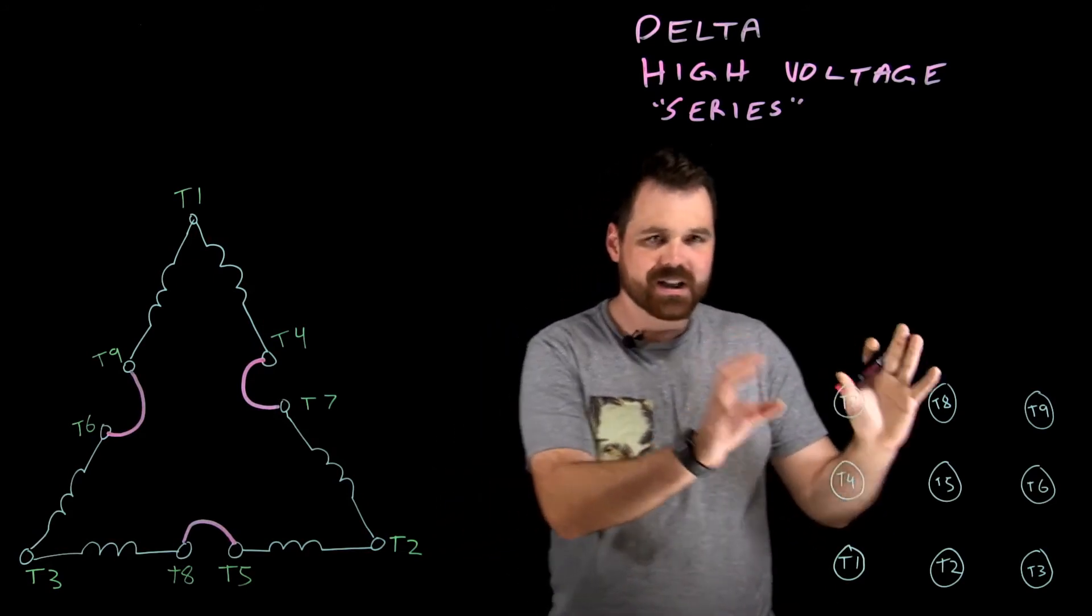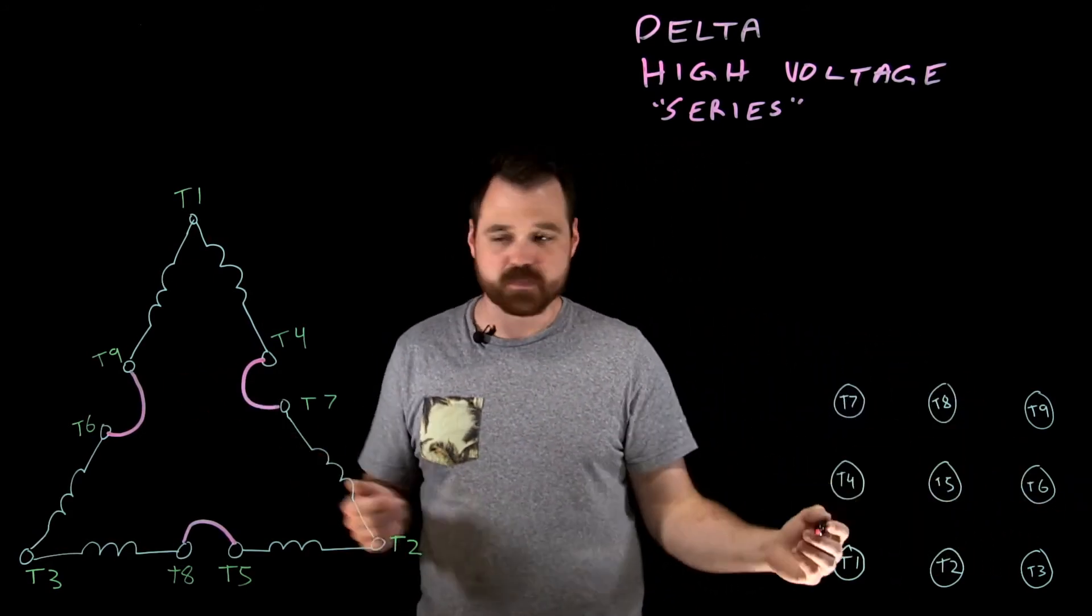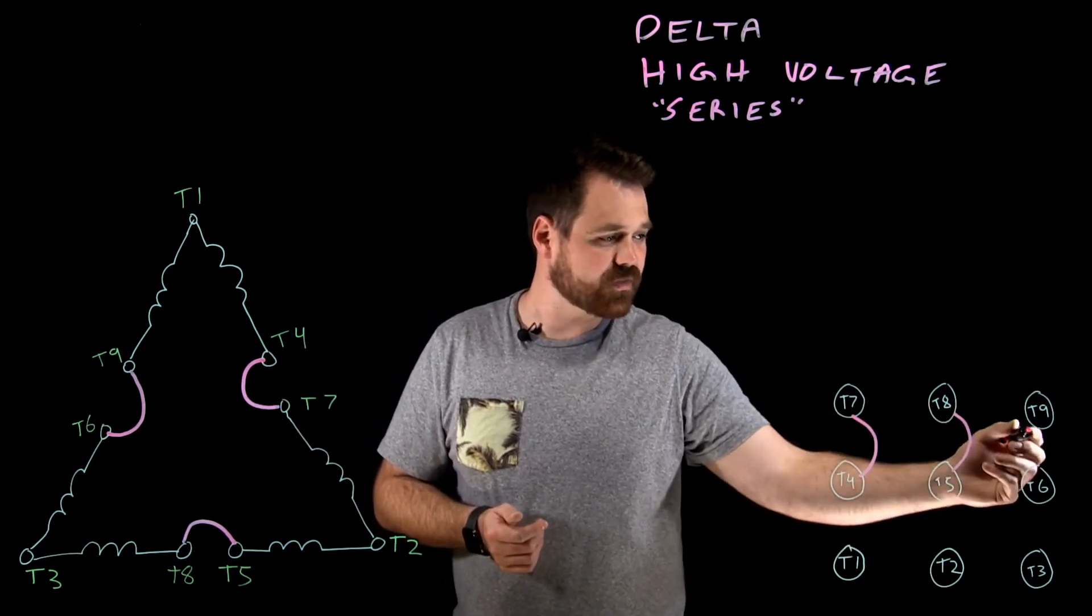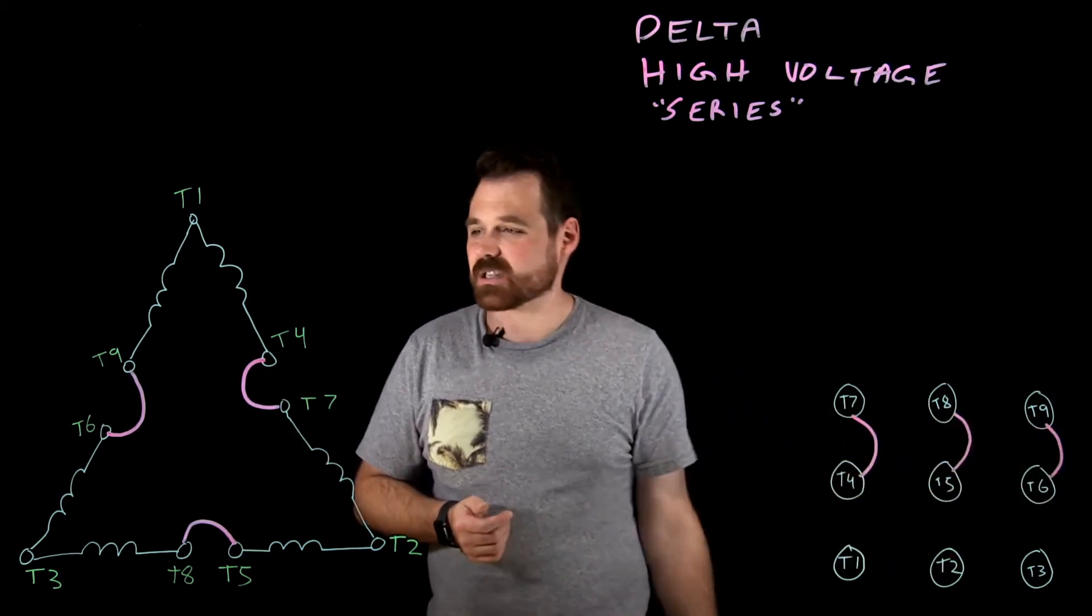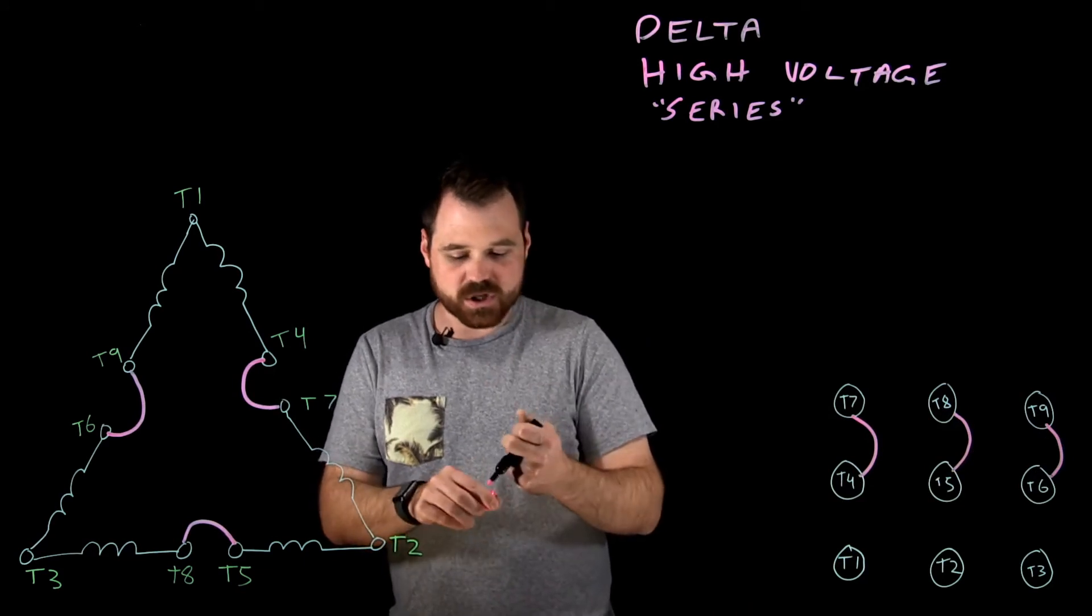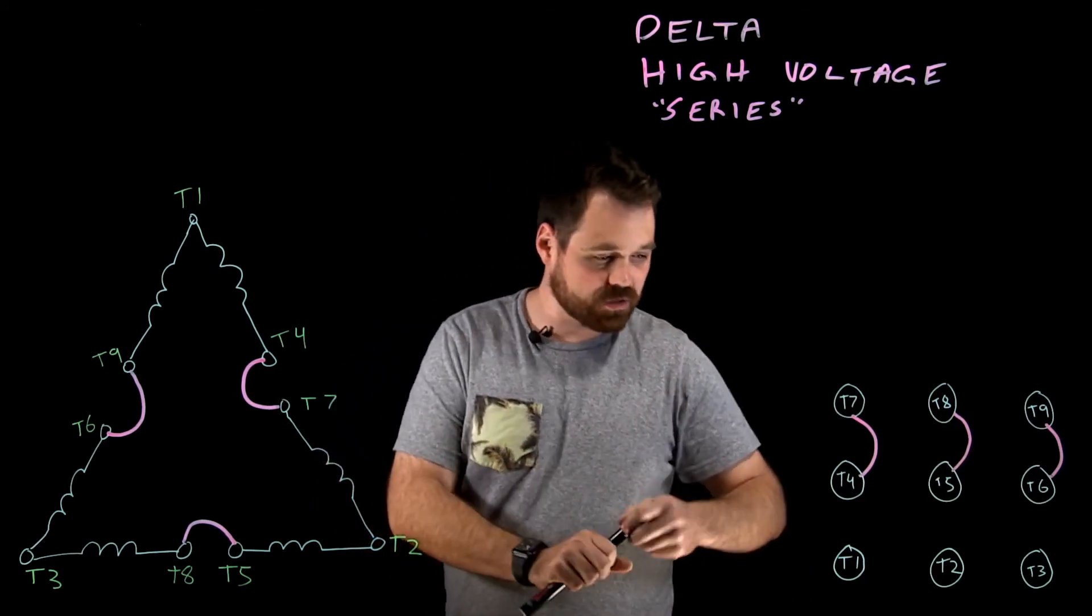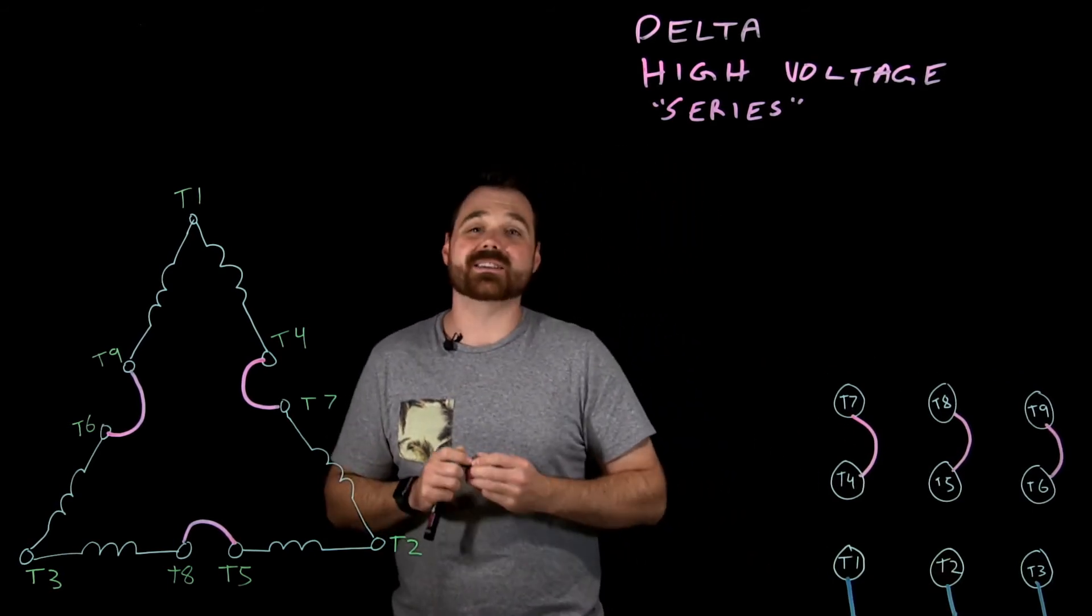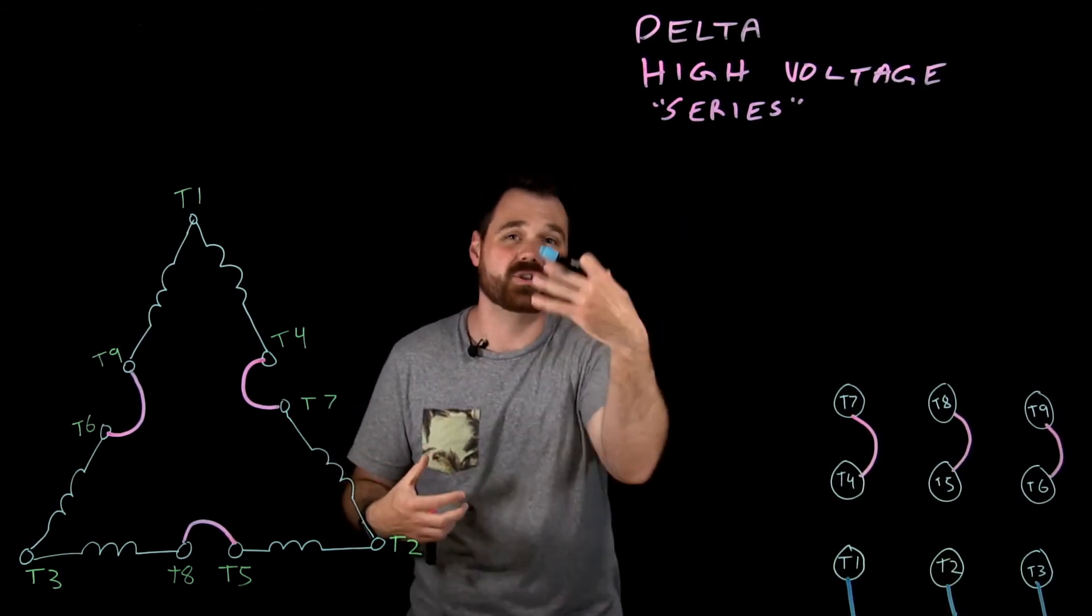So we pop over to here. Here's our conductors in our junction box. We're going to splice up T4 and T7, T8 and T5, T6 and T9. And of course, we would connect T1, T2, and T3. Those are going to get connected up to our source to line one, line two, and line three.